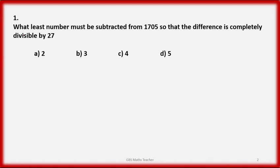The first question: what least number must be subtracted from 1705 so that the difference is completely divisible by 27? The options are 2, 3, 4, and 5.